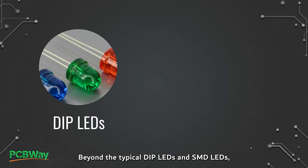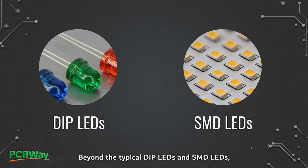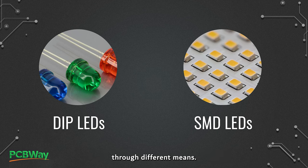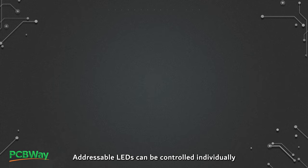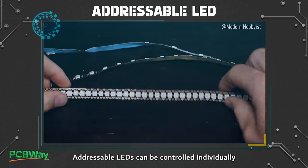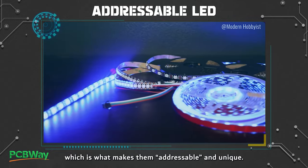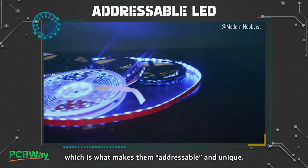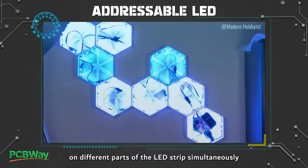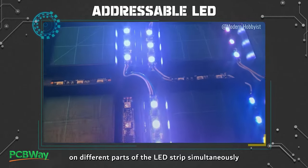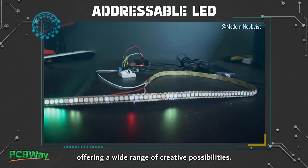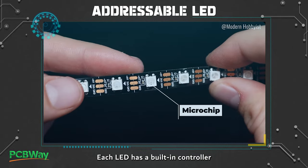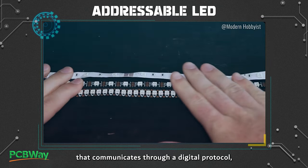Beyond the typical DIP LEDs and SMD LEDs, you can achieve captivating lighting effects through different means. Two special types stand out: addressable LEDs and wireless LEDs. Addressable LEDs can be controlled individually or in groups, which is what makes them addressable and unique. They enable you to create dynamic lighting effects on different parts of the LED strip simultaneously or in customizable intervals, offering a wide range of creative possibilities.